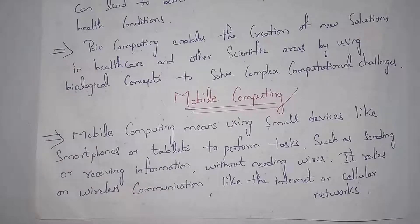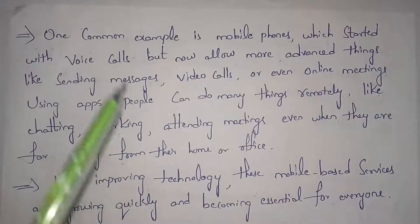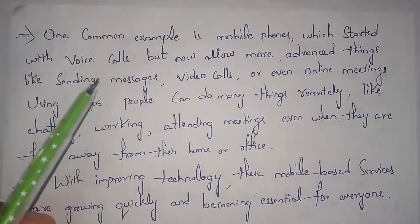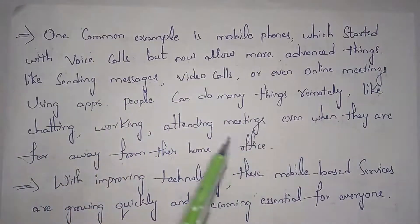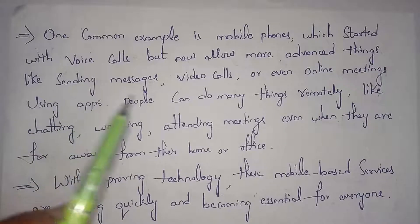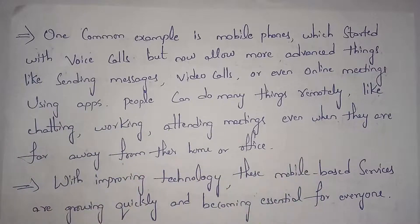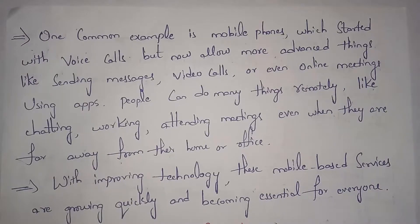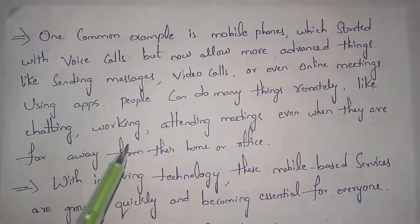You can communicate from one device to another device by using internet or by using cellular networks. One example of mobile computing is using a mobile phone — in olden days we could only do voice calls, but at present we can do so many things like sending messages, video calls, online meetings, and using various kinds of apps. People can do many things remotely like chatting, working, attending meetings even when they are far away from their house or office.